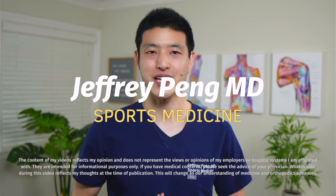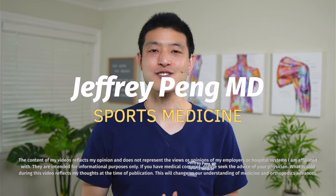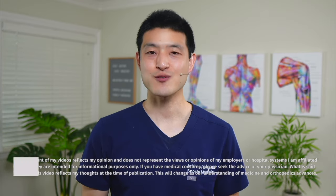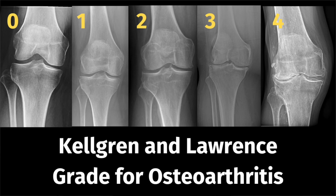Hey everyone, Dr. Jeff Pang here. Doctors often use x-rays to assess the severity of arthritis using the Kellgren and Lawrence system for classification of osteoarthritis. This is also called the KL grading system for osteoarthritis.